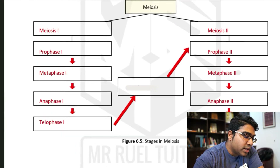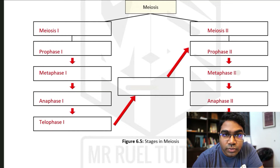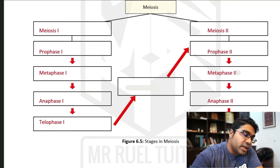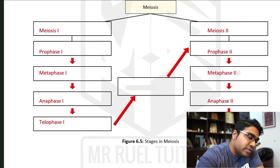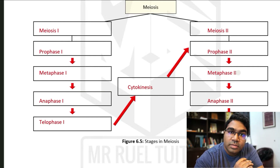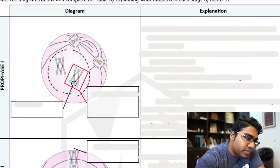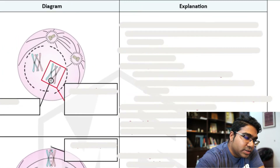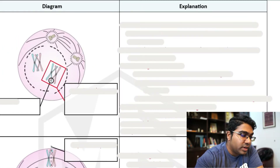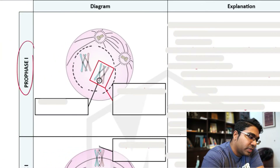Between telophase 1 and the beginning of meiosis 2, we have the division of the cytoplasm — that means we have cytokinesis. Let's focus in on meiosis 1. In meiosis 1, just like in mitosis, we begin with prophase, and this is called prophase 1.